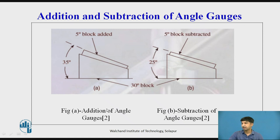Addition of angle gauges: when both the V are in same line, addition takes place. So 30 degree plus 5 degree, 35 degree angle is formed.